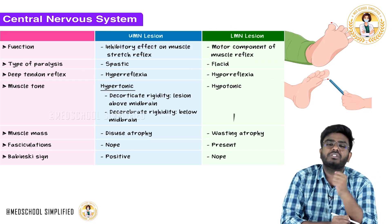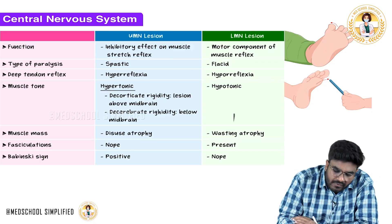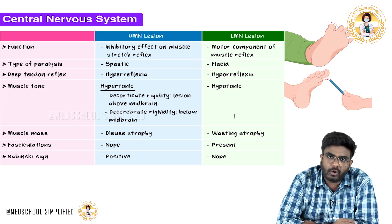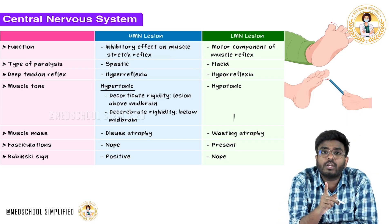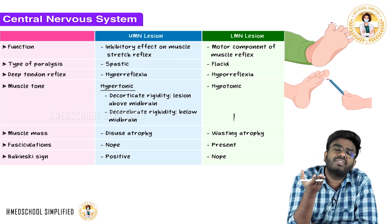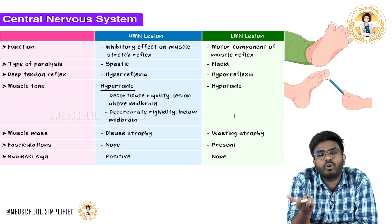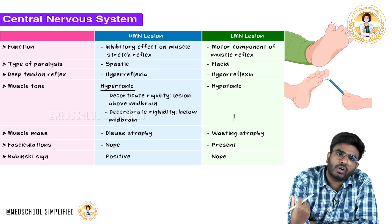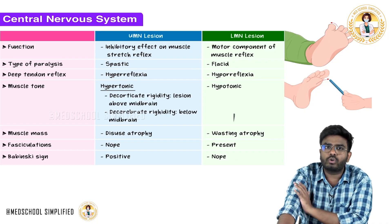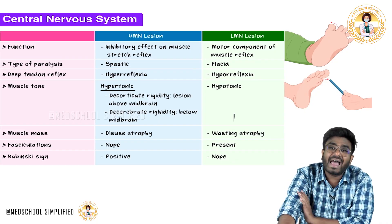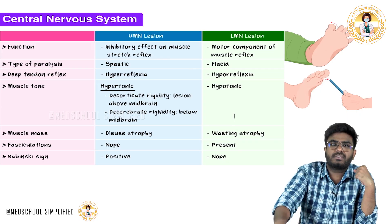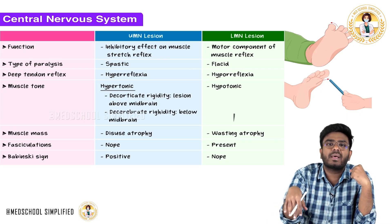In lower motor neuron lesions, flaccid paralysis is seen. Because lower motor neurons directly control the muscle, if the lower motor neuron itself is dead, the muscle will not contract. The muscle is absolutely relaxed, paralyzed, with no tone — resulting in flaccidity and flaccid paralysis.